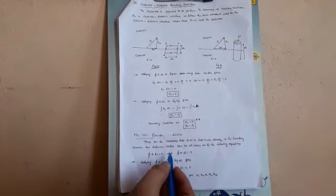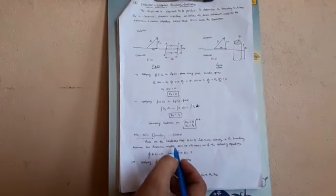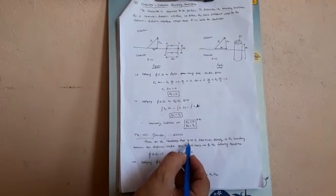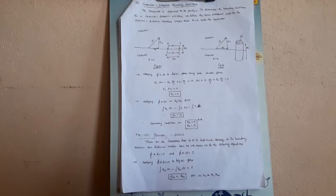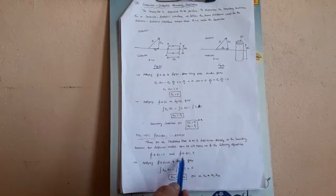Magnetic boundary conditions. These are the conditions that magnetic field intensity or magnetic flux density must satisfy at the boundary between two different media. Here we will make use of the following equations: surface integral of B dot dS is equal to 0, and closed integral of H dot dL is equal to I.